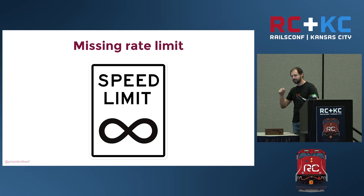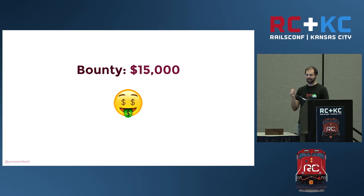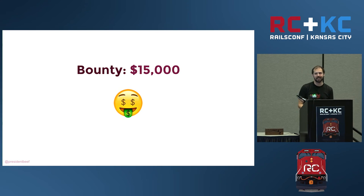It's just a straightforward missing rate limit — should have been a rate limit, there wasn't one. Interestingly, this is probably the simplest of all these examples, and yet he got the most money, because the impact is: I can get into anyone's Facebook account.